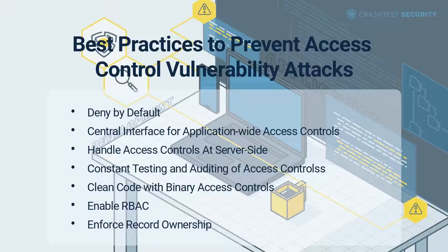Deny by default. With access control, a good rule of thumb is to start with the minimum required privileged functions. For example, by default, every application's user should be denied access to application resources, with only a legitimate user getting permissions to view, access, and modify them.